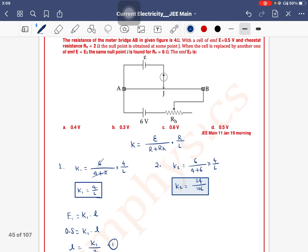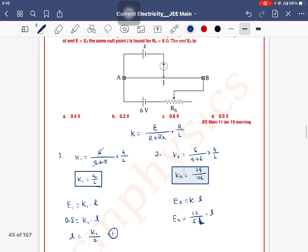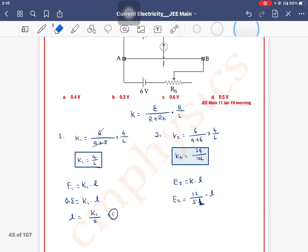Second case, E2 we don't know how much is? E2 is equal to K2 into L. So E2 is equal to, what is it? 24 by 10 L, means 12 divided by 5 L. 5 capital L into small L. Okay, K2 we keep it like this, we'll put it later. In both cases, one K2 will come.